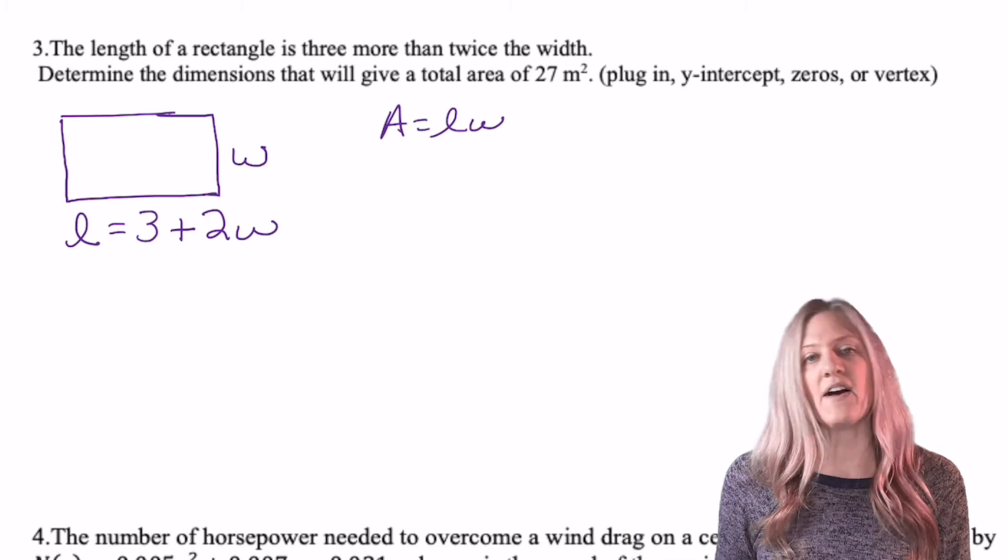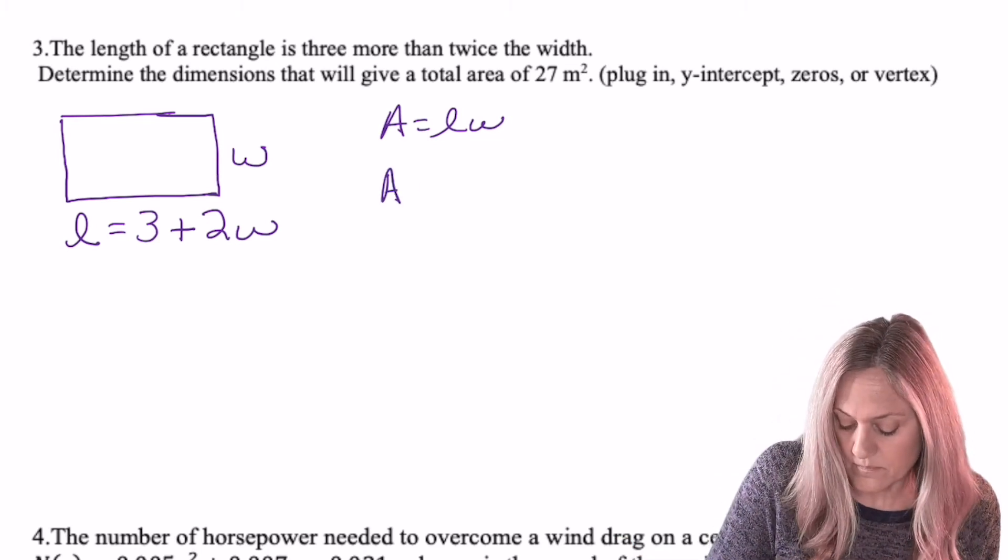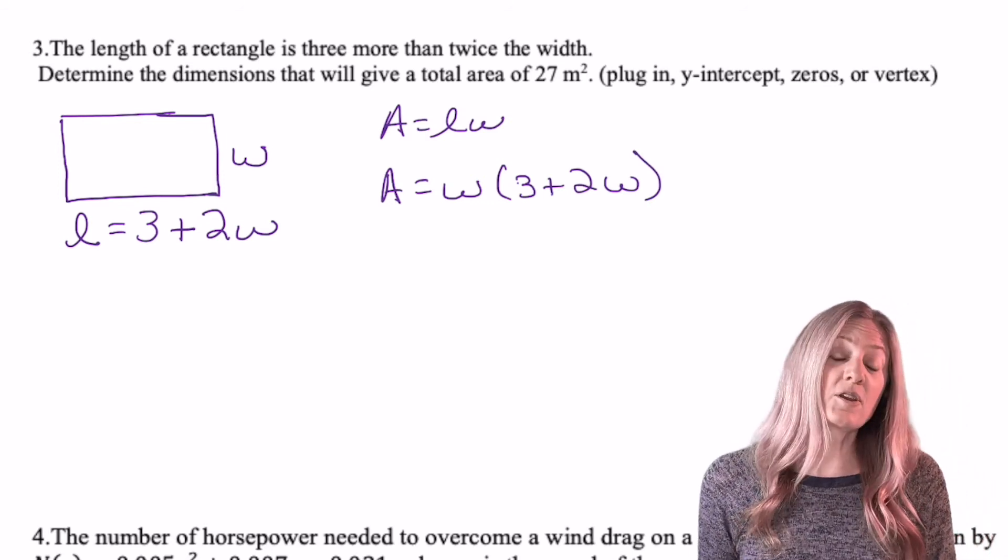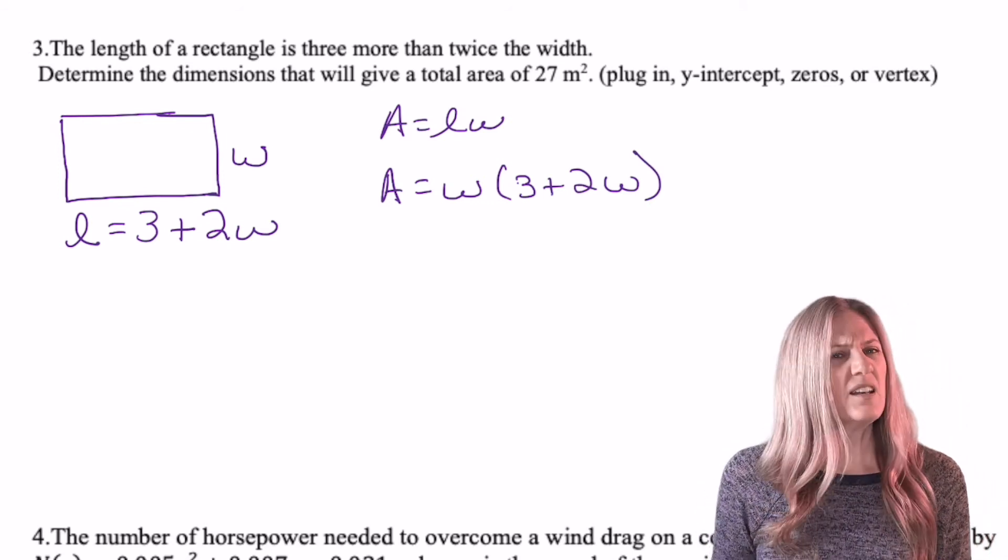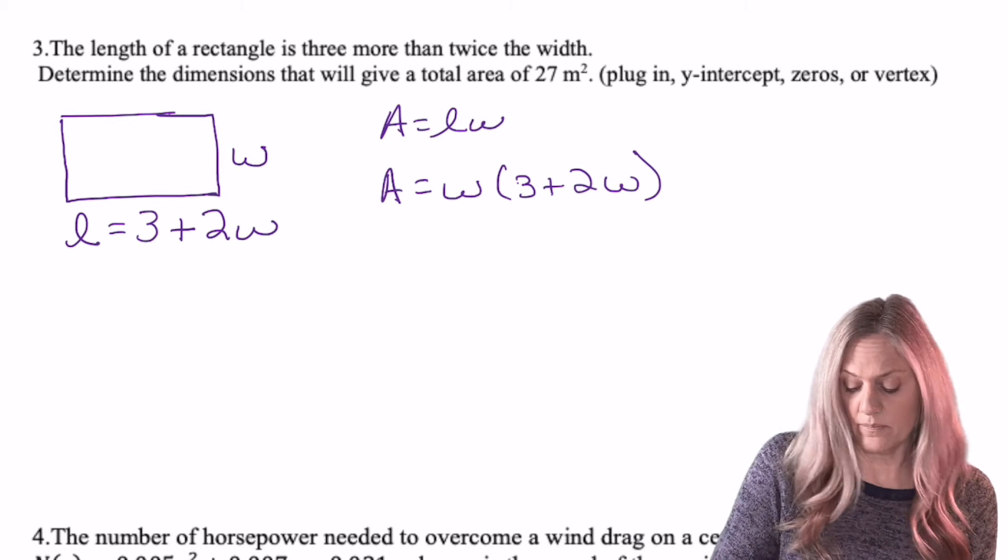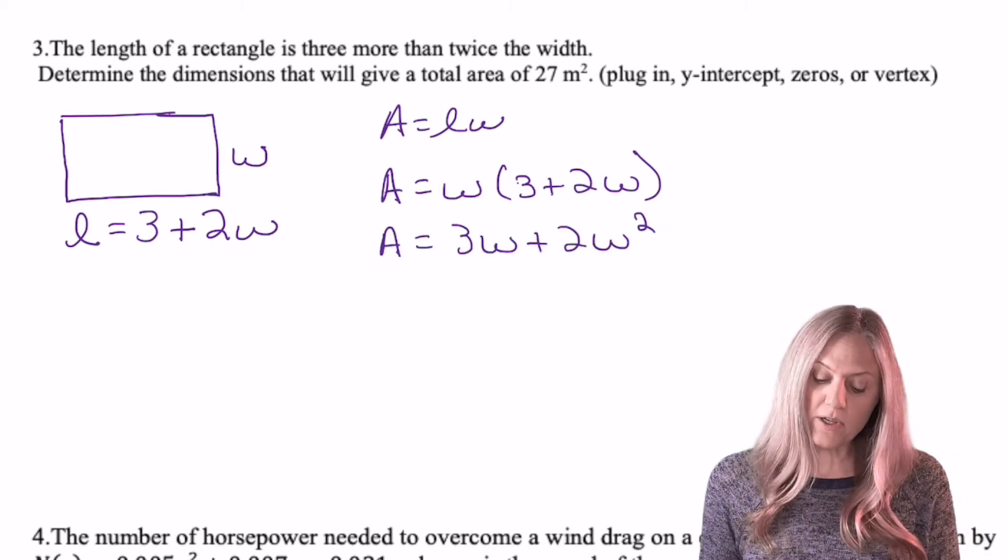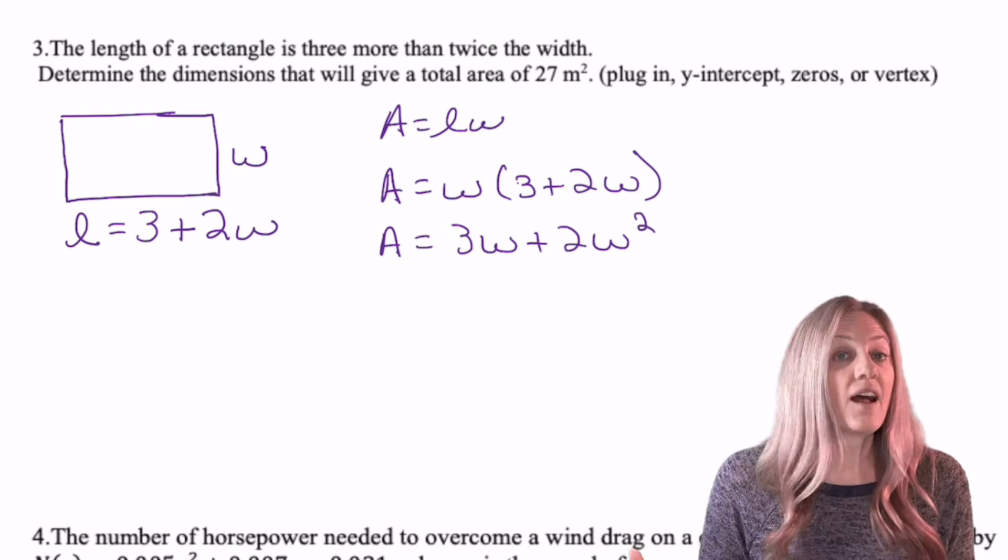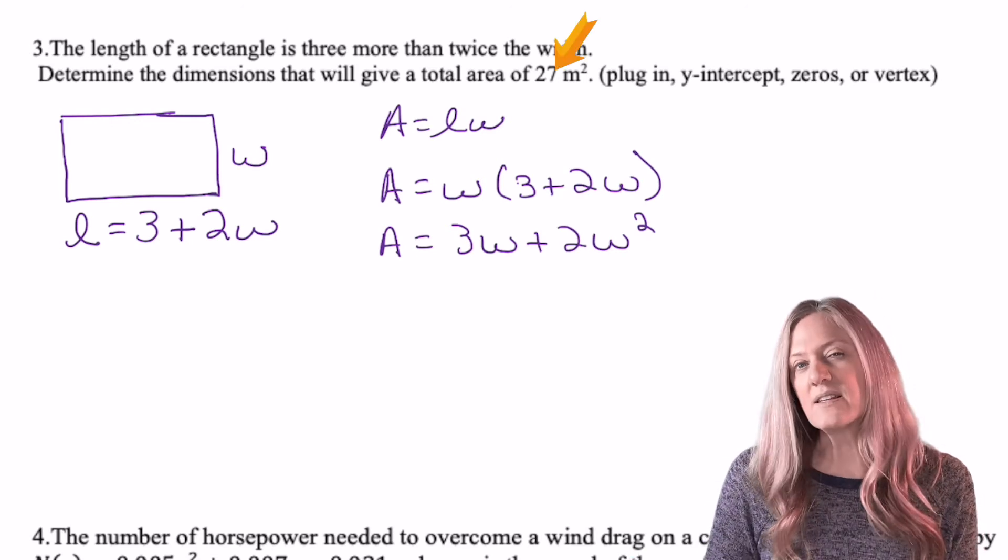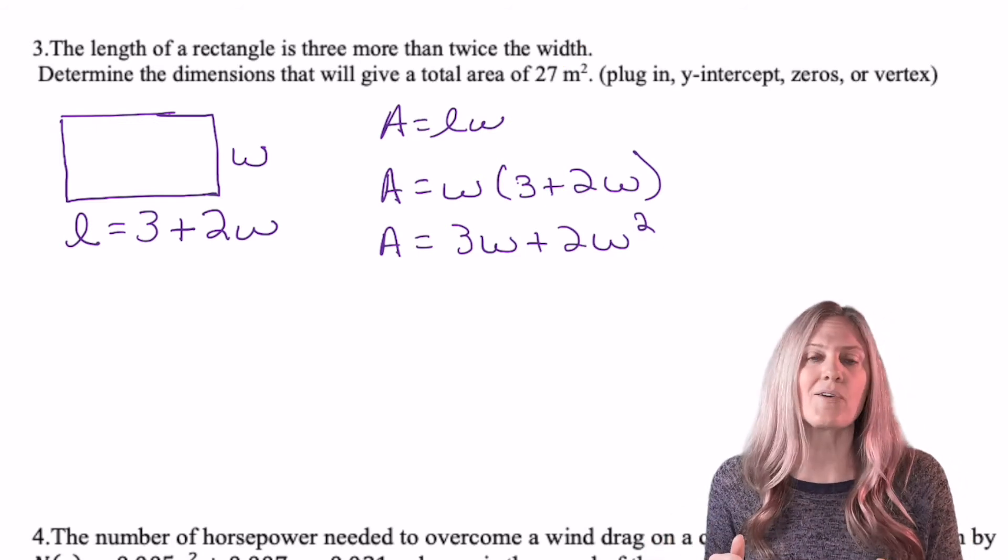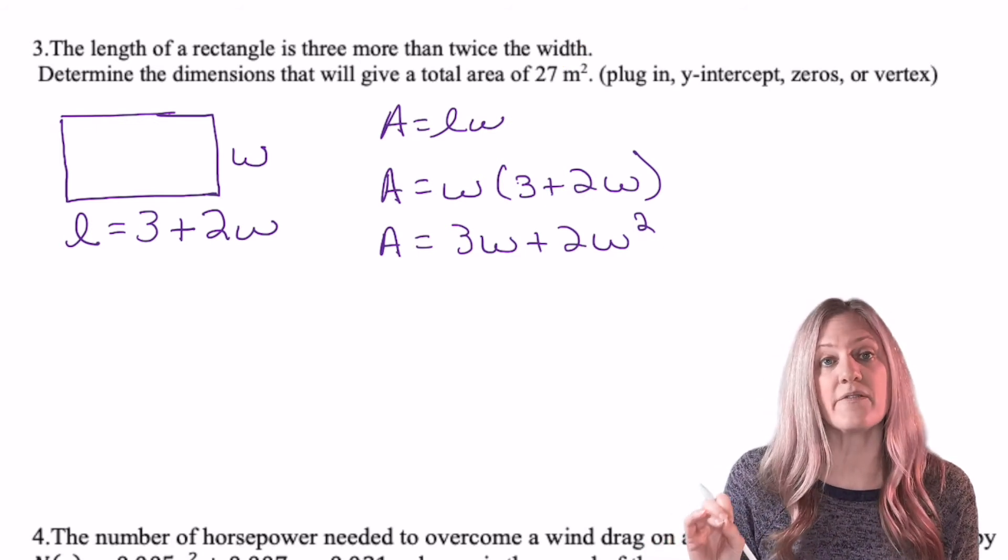And then it describes the area. It says determine the dimensions that will give a total area. What's the area of a rectangle? Length times width. But I don't want to have area equals l times w. Good thing I can substitute the value for l. Notice I use commutative property of multiplication. Now I'll go ahead and distribute. So I have an area equation that is a quadratic 2w squared plus 3w. I want the dimensions when the area is 27 square meters. Square meters tells me that the 27 is the area. So I'm going to substitute 27 for a.